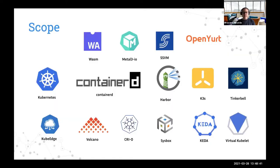In the scope of the SIG we have many different projects in different areas. Here are some of the logos of projects that have presented. Some have applied for different stages in the CNCF. For example, Containerd and CRI-O are in Kubernetes — the main project that started the CNCF — and are in graduated state. There are also projects at the edge like KubeEdge and OpenYurt, and other projects that allow you to run WebAssembly on your system.